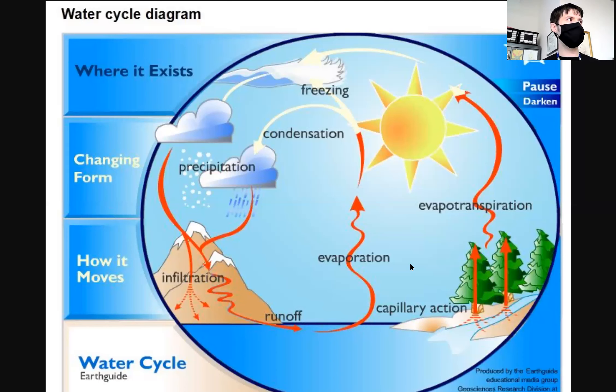Yes, runoff is like if it rains really hard and the soil doesn't have time to soak it up. Sometimes the water just runs down a hill and into a river, which takes it into the ocean, eventually. Yeah. Yes. Infiltration is when the land soaks up the precipitation. Like a sponge.